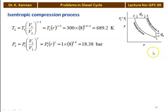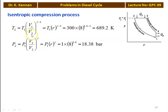We take the PV diagram of the Diesel Cycle: 1 to 2 is the isentropic compression process, 2 to 3 is the constant pressure heat addition process, 3 to 4 is the isentropic expansion process, and 4 to 1 is the constant volume heat rejection process. For the isentropic compression process, T2 equals T1 into (V1/V2) to the power gamma minus 1, which is T1 into R to the power gamma minus 1: 300 into 8 to the power 0.4 equals 689.2 Kelvin. The pressure P2 equals P1 into R to the power gamma: 1 into 8 to the power 1.4 equals 18.38 bar.